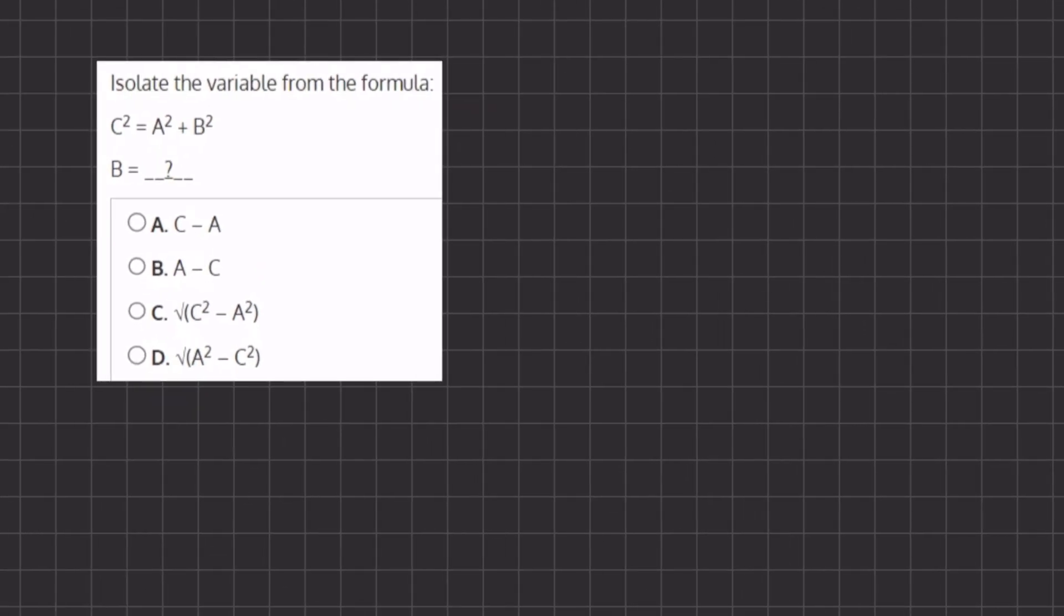All right, so in this problem we want to isolate the variable b from our formula, and in order to do so we want to subtract this a squared that's placed on the right hand side over to the left.